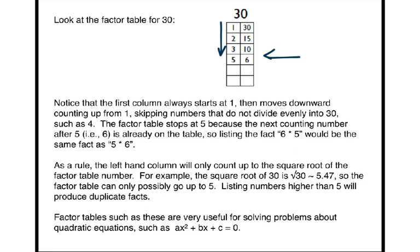As a rule, the left-hand column will only count up to the square root of the factor table number. For example, the square root of 30 is approximately 5.47, so the factor table can only possibly go up through 5. Listing numbers higher than 5 will produce duplicate facts.